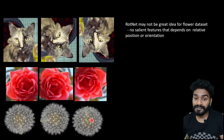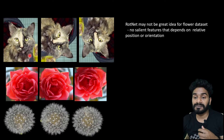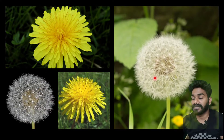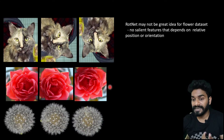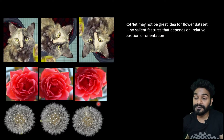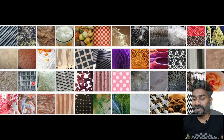If you have this kind of dataset, RotNet would not be a good idea unless the dataset has some salient features that are easily discernible with rotations or orientations. Even for other examples like these roses, it will be tough even for us as humans to make out which degree of rotation it is. This actually serves as a learning — RotNet may not be a good idea when we have datasets with repeating patterns or texture data where even rotating it doesn't give you significant information about the rotation.